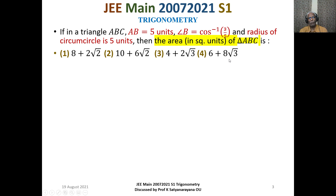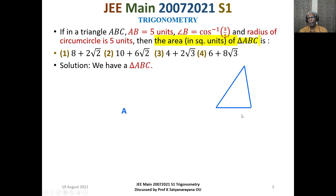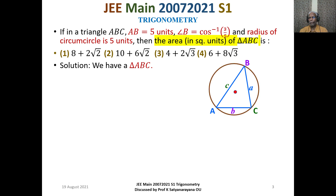We discuss the solution. We have a triangle ABC with angles A, B, and C. The side opposite to angle A is denoted by lowercase a, opposite to angle B by lowercase b, and opposite to angle C by lowercase c. Every triangle has a circumcircle — for any given triangle we can always draw a circumcircle. The capital R denotes the radius of the circumcircle.